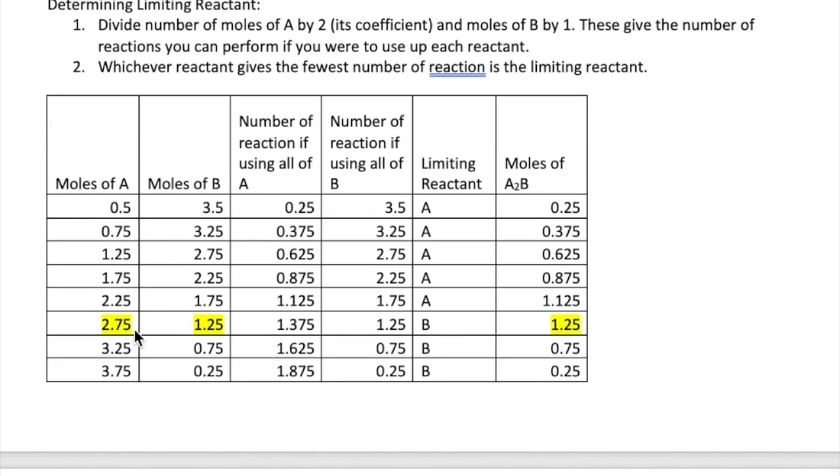The table here shows various ratios of A to B with the total kept at 4 moles. So, for example, you can mix half a mole of A and three and a half moles of B, or you can mix 1.25 moles of A and 2.75 moles of B. All of these numbers will add up to 4. Now, what we will do is calculate the number of moles of product, which is A₂B, that's formed for each mixture. To calculate the product, we're going to need to find the limiting reactant in each case.